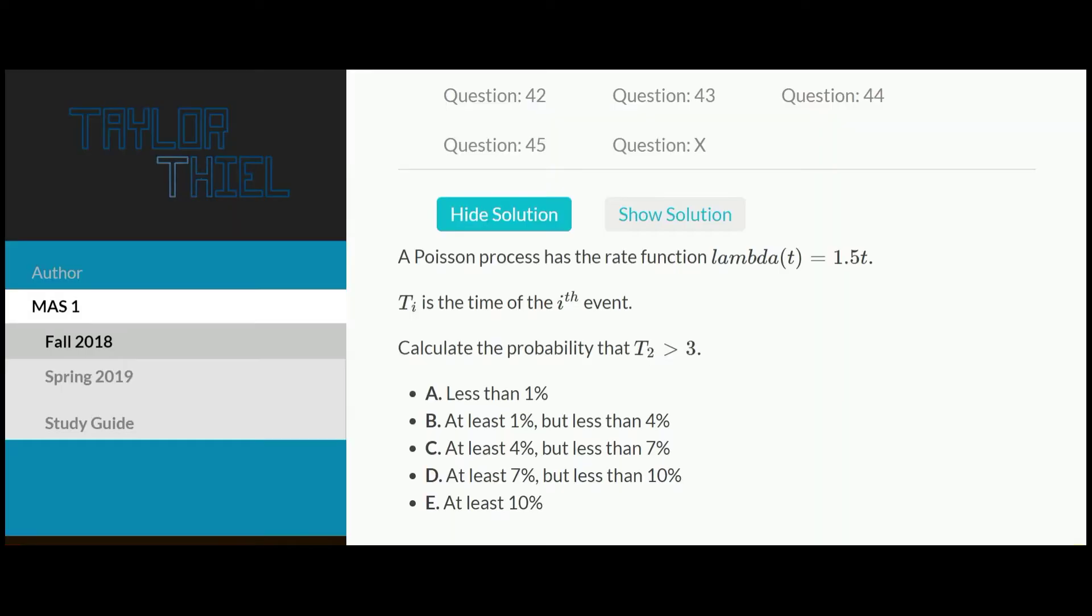A Poisson process has the rate function lambda of t equal to 1.5 times t. t subscript i is the time of the ith event. Calculate the probability that t subscript 2 is greater than 3.